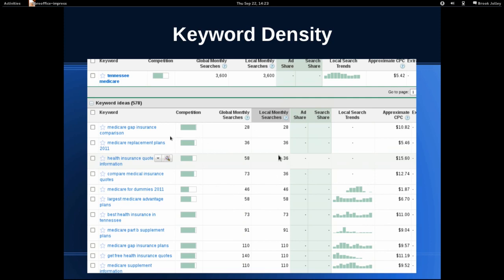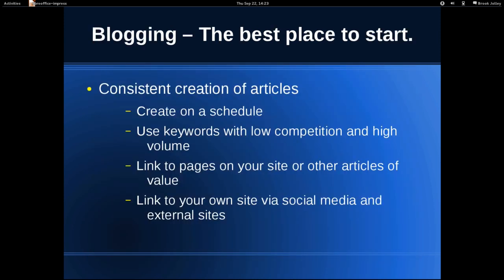This is a search I've reversed to show you what not to target. You might think 'Medicare gap insurance comparison' sounds like a buying term, but no one is searching for it and the competition is huge. 'Medicare replacement plans' — no one is searching for it, competition is huge. 'Medicare for dummies' — competition is mediocre, but no one's searching for it. The only time you would ever want to target something no one searches for now is if you think there is a high likelihood someone will search for it in the future and you want to cement a position. Otherwise, it's utterly pointless — not a good expenditure of your time for marketing efforts.